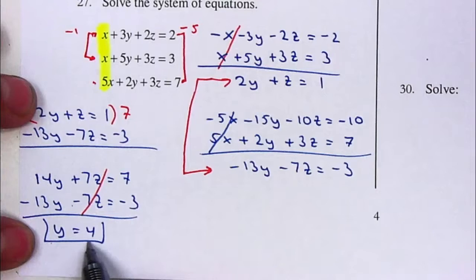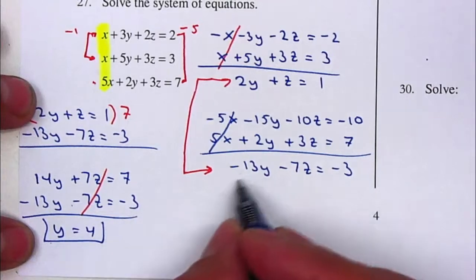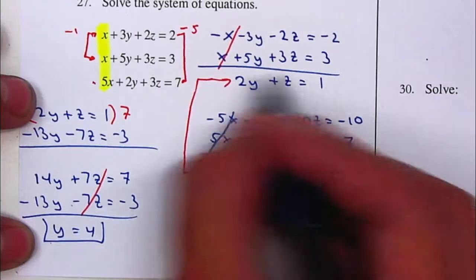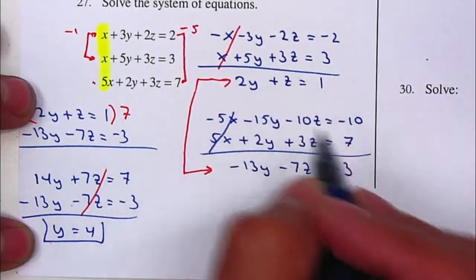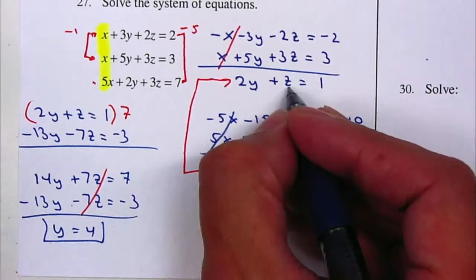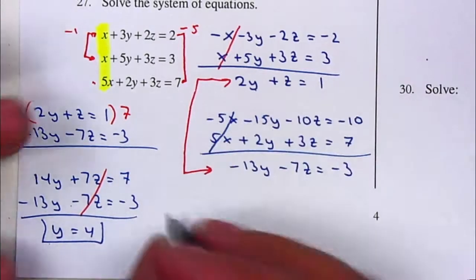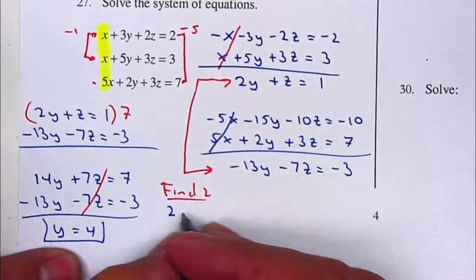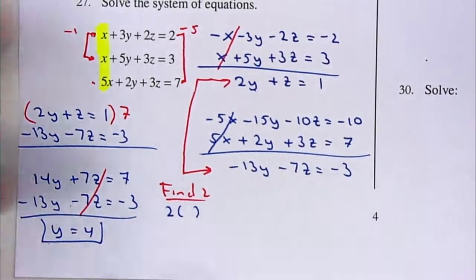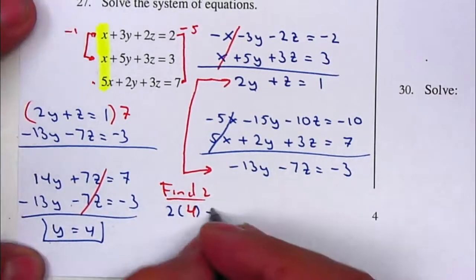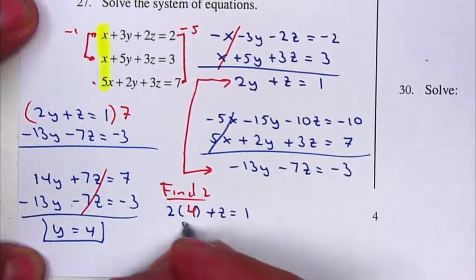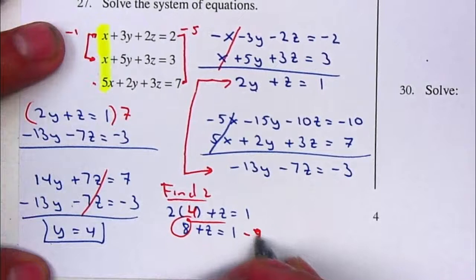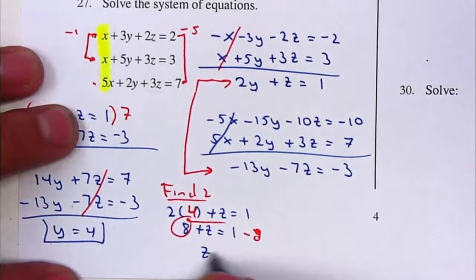Since I only have one value, I'm going to plug it into an equation that has two variables. I'll plug Y into this equation because it has slightly smaller numbers, to find Z. That gives me 2 times 4 plus Z equals one — eight plus Z equals one. Moving the eight to the right gives Z is equal to negative one.